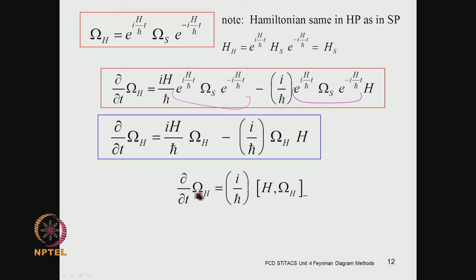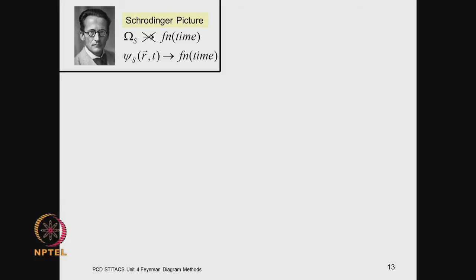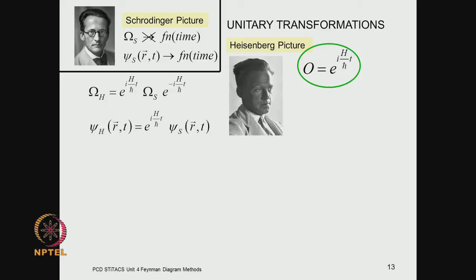This Heisenberg equation of motion governs time evolution: operators are time dependent, wave functions are independent of time. This is contrasted with the Schrödinger picture in which operators are time independent and wave functions are time dependent. The transformation between the two is effected through the generalized unitary transformation operator e^{iHt/ℏ}, which provides the generalized rotation in Hilbert space from the Schrödinger picture to the Heisenberg picture.